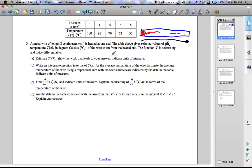To estimate the instantaneous rate of change of temperature at x equals 7 centimeters, we can take these two points and use the slope formula to estimate the rate at that point.